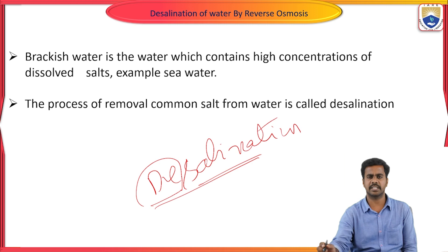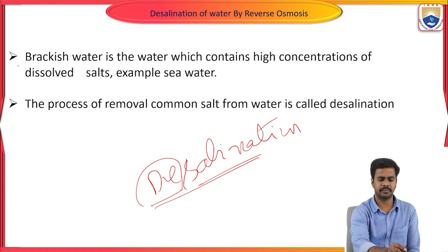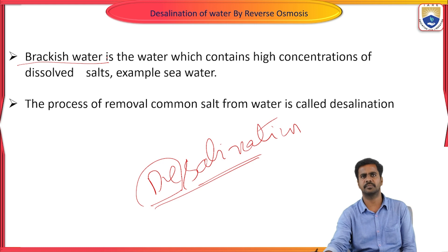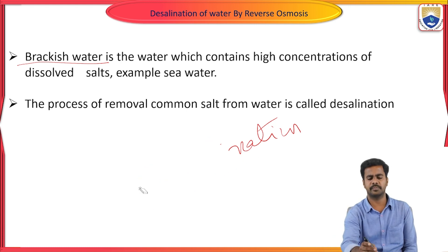Desalination of water is also known as brackish water treatment. Brackish water is water which contains excess of salt. So by using the desalination process, salt can be removed from water — that is known as desalination of water.